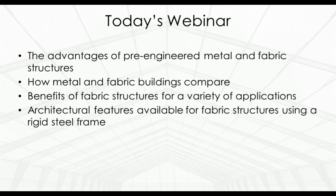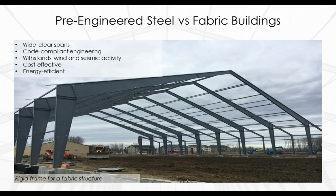Today's webinar will compare fabric structures with pre-engineered metal buildings. You will learn the advantages of pre-engineered metal and fabric structures, how the two types compare, the benefits of fabric structures for various applications, and architectural features available for fabric structures on a rigid steel frame. Both types are constructed using a rigid steel frame, which increases durability by enhancing how the frame carries vertical loads, enabling wide clear spans, code-compliant engineering, and cost-effective construction.